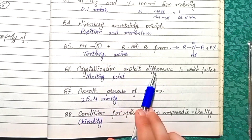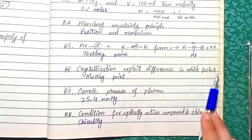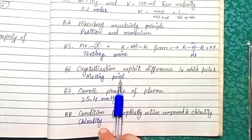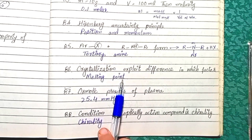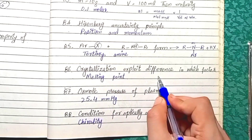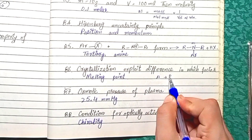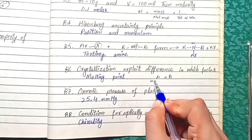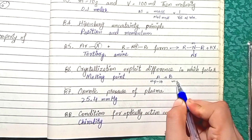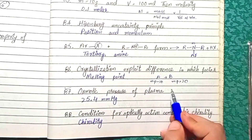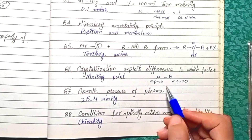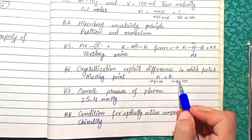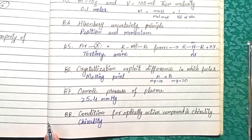Question 86: Crystallization exploits the difference in melting point. One substance has a different melting point from another, making differential crystallization possible. For example, if substance A has a melting point of 10°C and B has 20°C, cooling their solution will cause A to crystallize out first; it is removed, and B crystallizes out afterward.